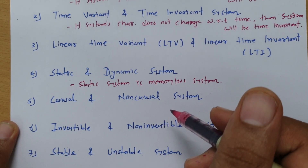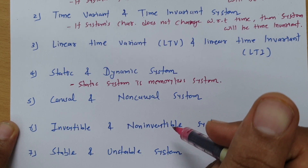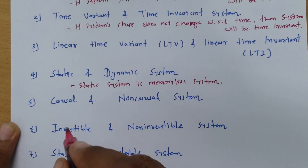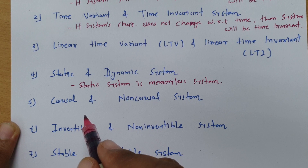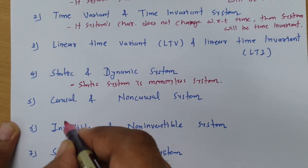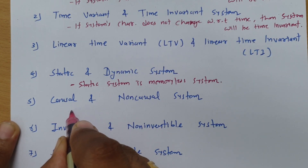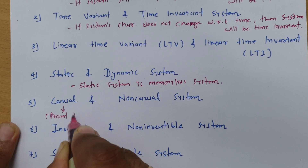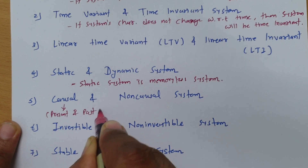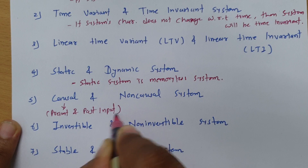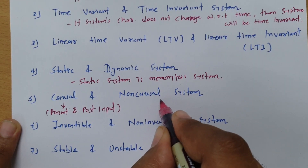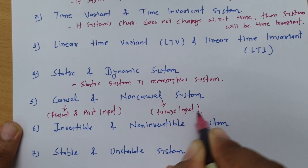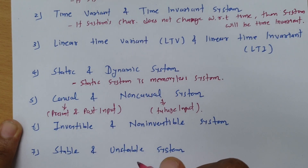Next is causal and non-causal systems. A causal system is one which depends on present and past input. If a system depends on future input, then it will be a non-causal system.